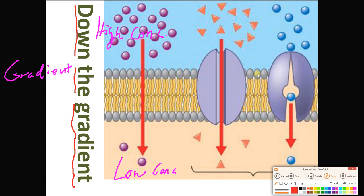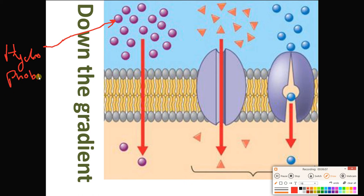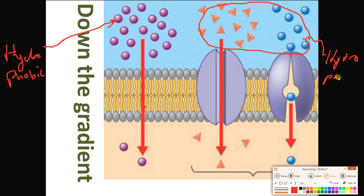Notice that the purple circle guys go right through the membrane, whereas the orange and blue require the help of a protein. That means the purple guys must be hydrophobic — only hydrophobic things can zip through the membrane. The blue and orange, requiring a protein channel or carrier, must be hydrophilic.